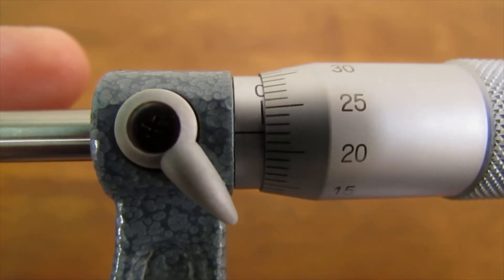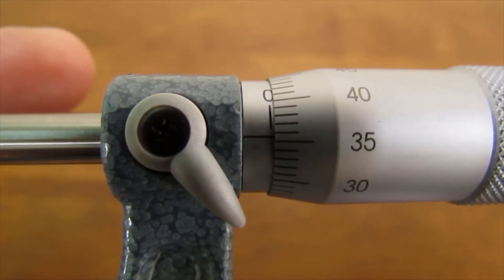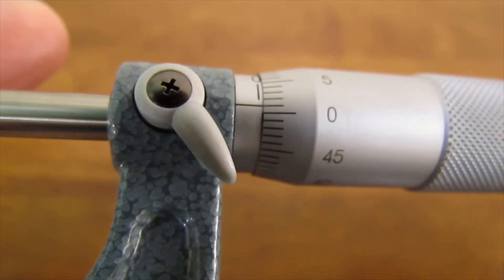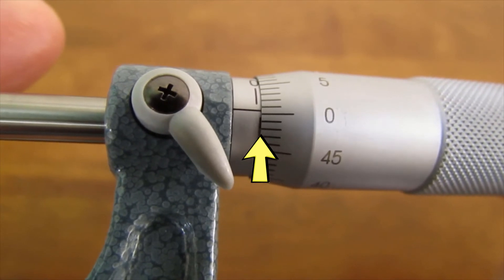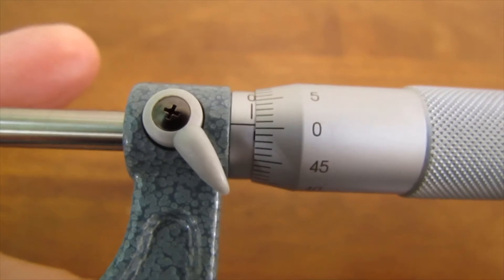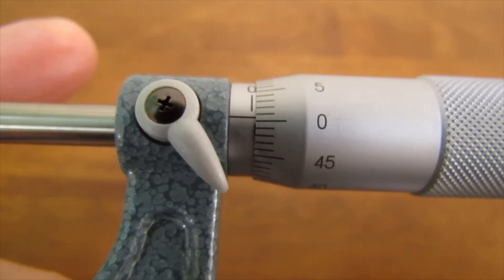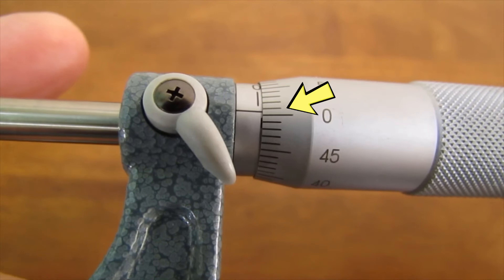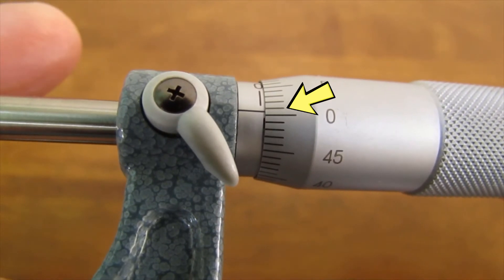If I turn the thimble completely one loop, I actually move only 50 gradations on this side. And over here, you'll see that there's a beginning of a line appearing. And that line represents half a millimeter. In other words, each of these gradations is actually 0.01 millimeters.